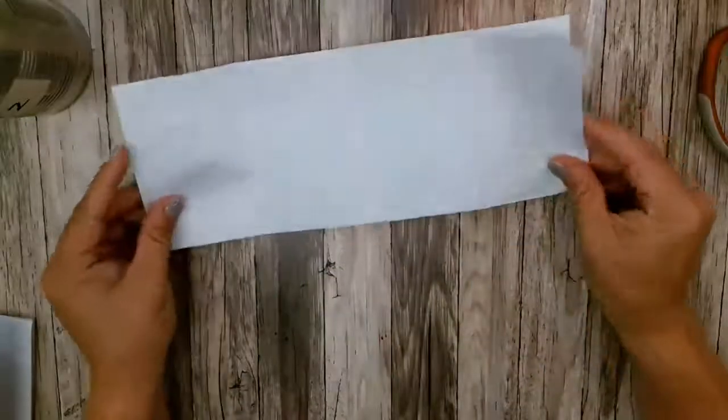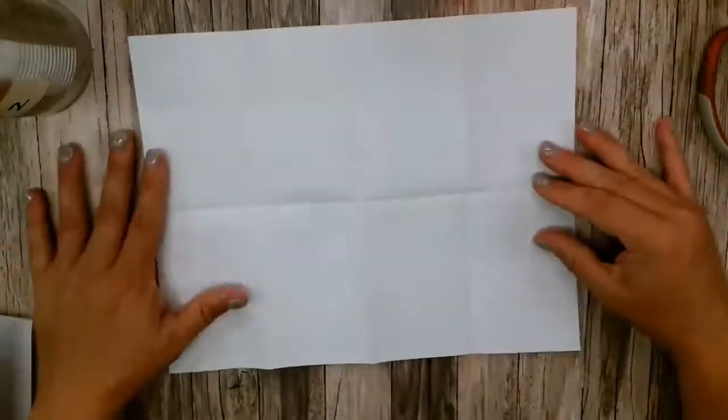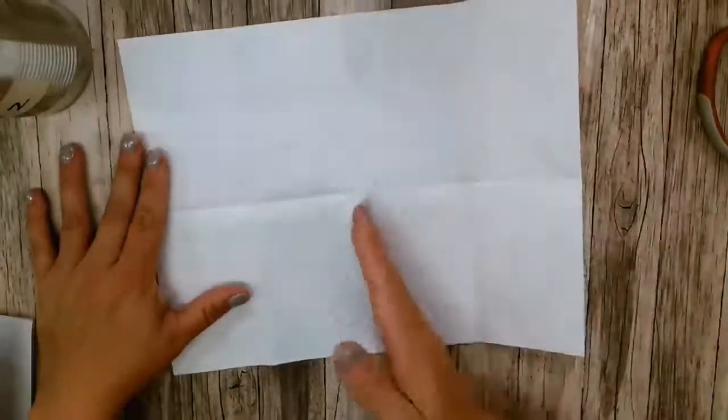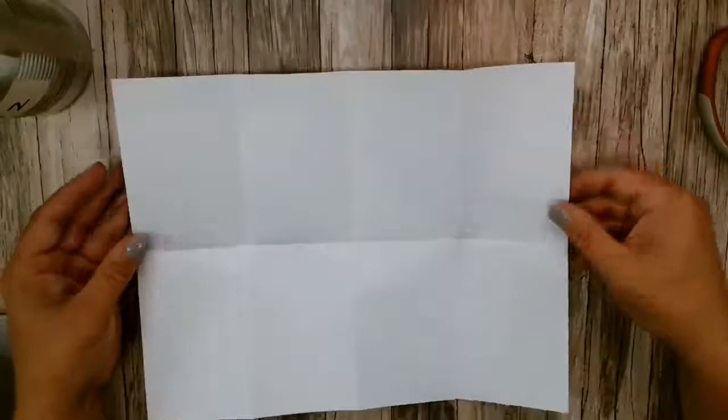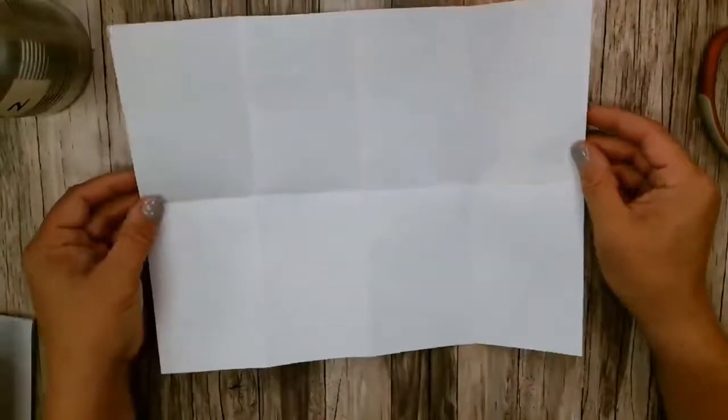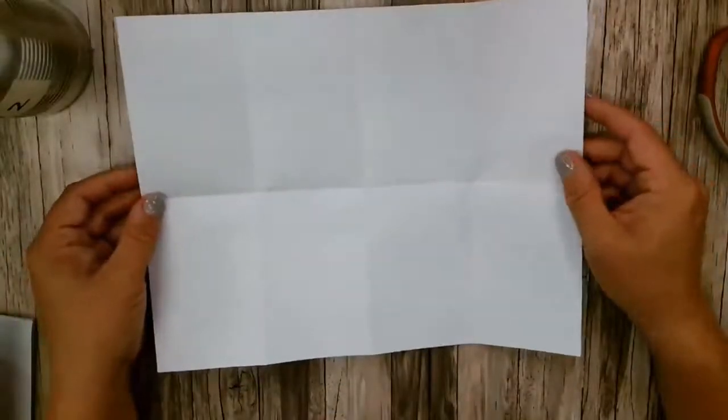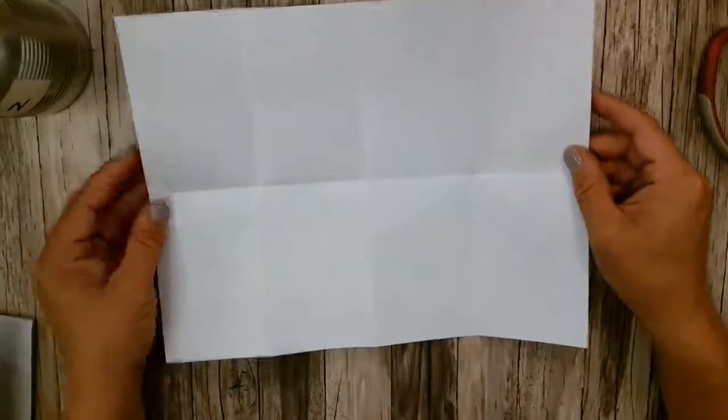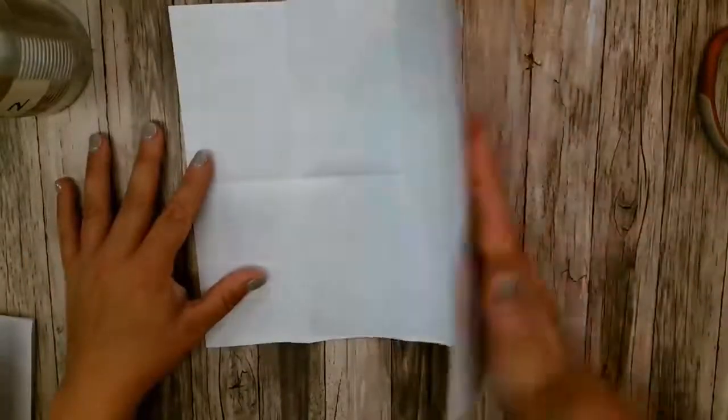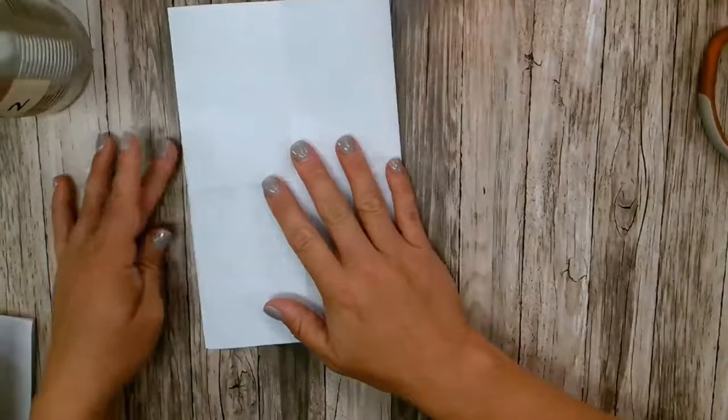Then you're going to open it back up, and on this center line here, again, my piece of paper is horizontal, or what we would call landscape. I'm just going to fold it on that center line again. Some people call this hot dog.